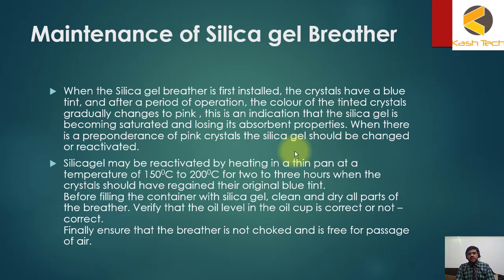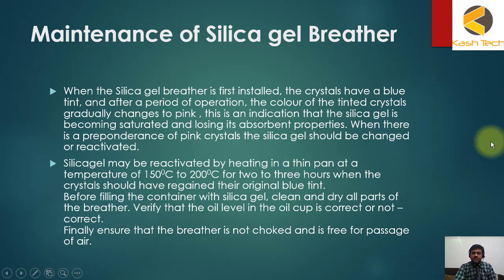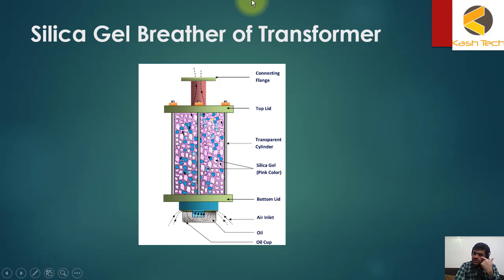There are two options: either replace the silica gel or regenerate it by heating up to 200 degrees centigrade for two to three hours to dry it out. Also check that air is passing through properly, check the oil level, and change the oil if needed. As shown in this picture, the color has changed from blue to pink, meaning it is time to take action.